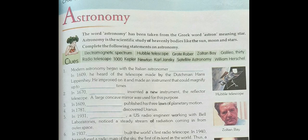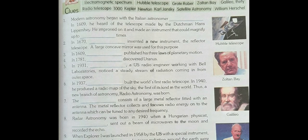Let's move to question number 7. The radio telescope consists of a large metal reflector fitted with an antenna. The metal reflector collects and focuses radio energy onto the antenna, which can be tuned to any desired frequency.